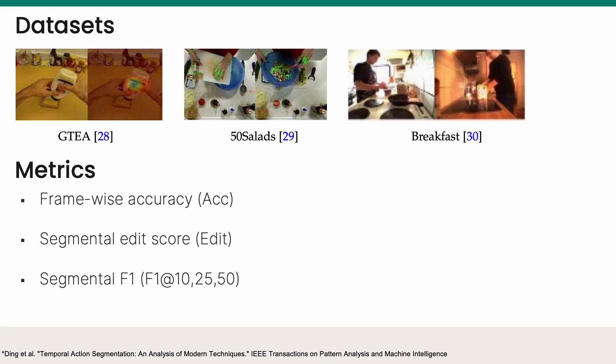We report the following metrics: mean per-frame accuracy, segmental edit score, which measures the alignment between the predicted actions order and the ground-truth actions order.